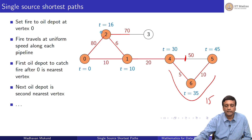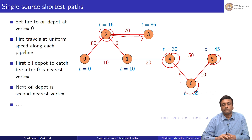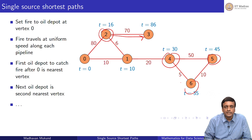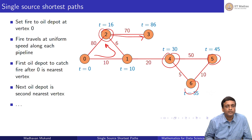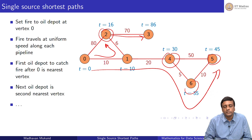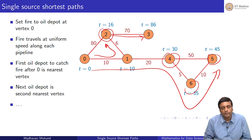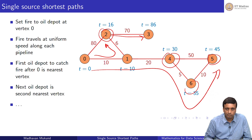Finally, at time 86, the fire which started from vertex 2 reaches vertex 3, and at this point, everything is burnt — all our vertices are burnt. We have discovered the earliest time at which every vertex burns. We can check that these earliest times are actually the shortest paths. For instance, the shortest path to vertex 5 is not 0-1-4-5 but 0-1-4-6-5.